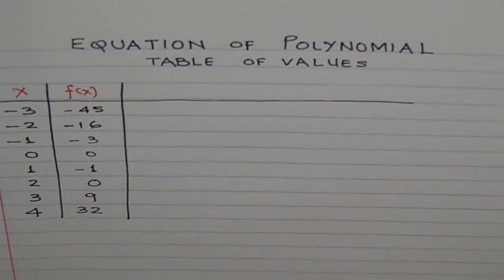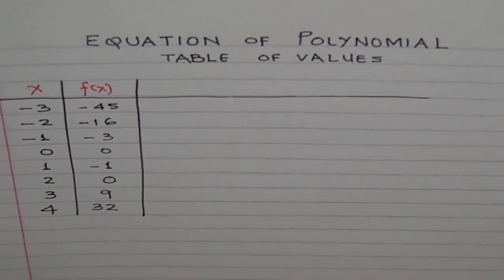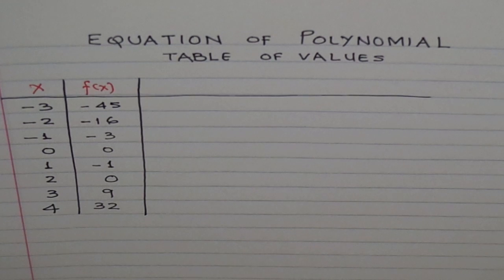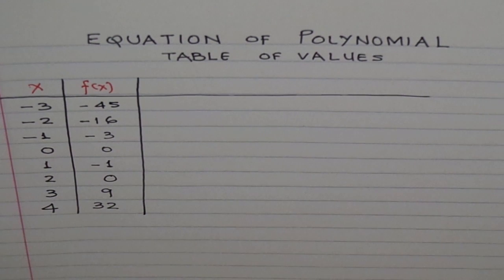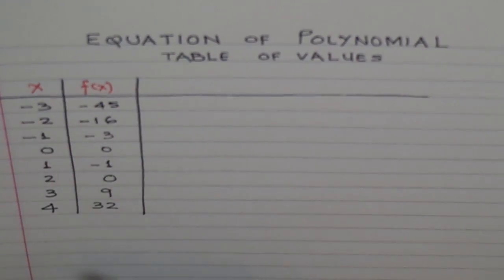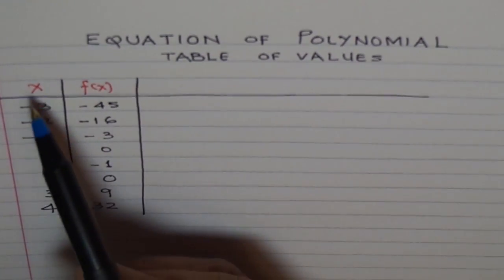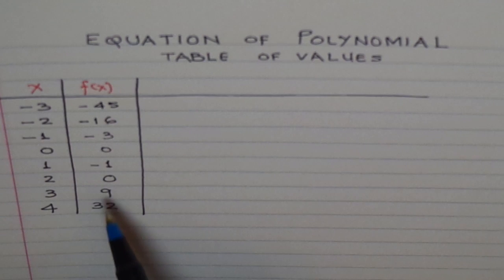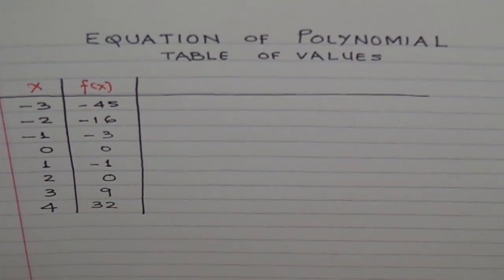Now let's see how to write the equation of a polynomial given a table of values. Here is a table of values. For these x values, the function values are given to us.